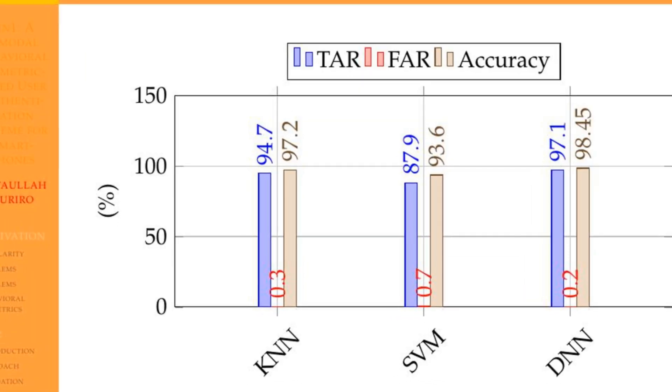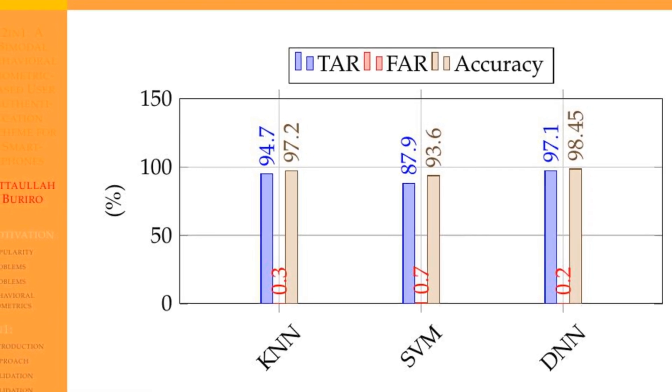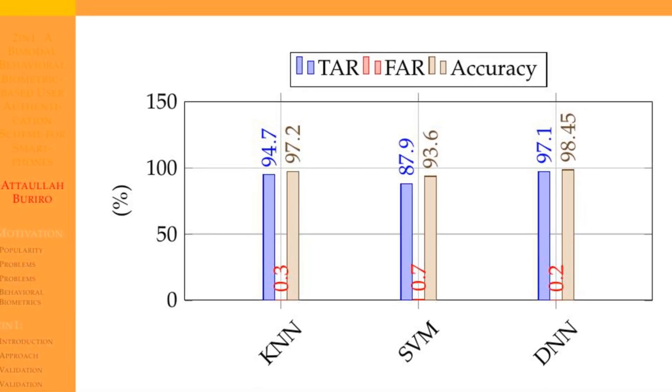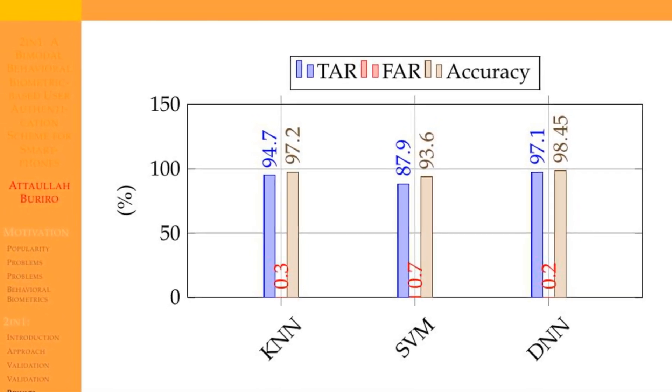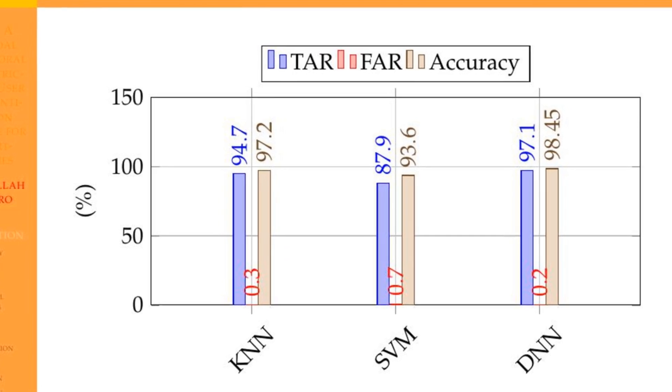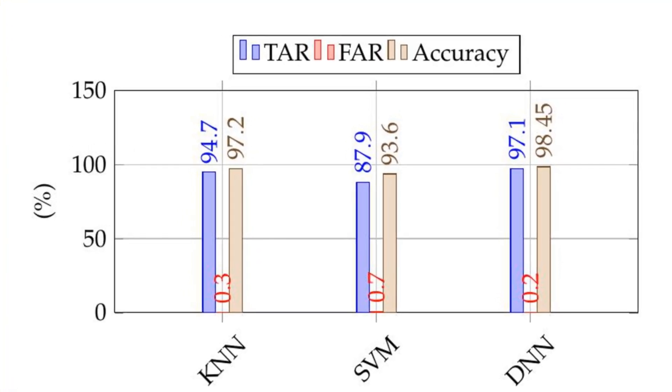Similarly, in bimodal settings, deep neural network performed really well and achieved as high as 98.45% accuracy with more than 97% TAR and just 0.2% FAR.